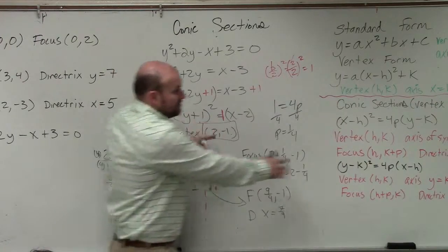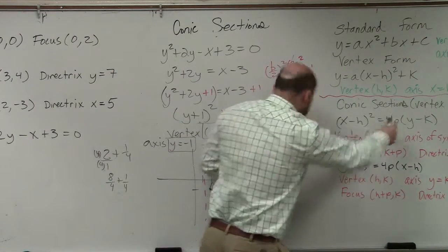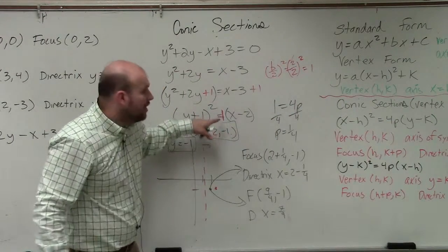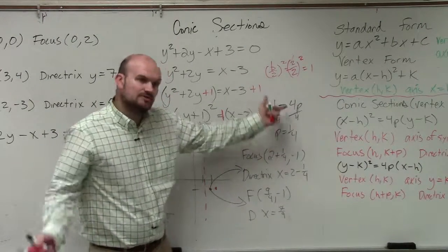So remember, p, 4p, right? 4p, it's what multiplied by the other side. I don't have a number there. So I have 1. So 1 equals 4p. Divide by 4, p equals 1 fourth.